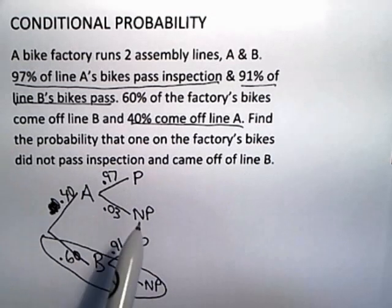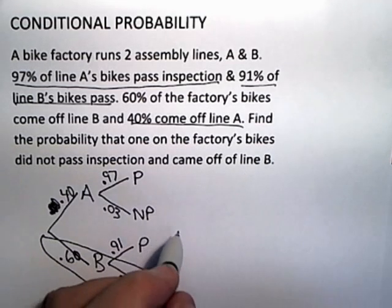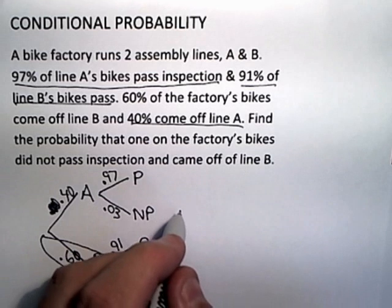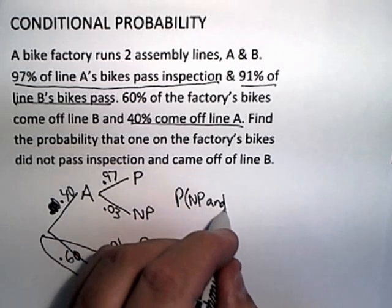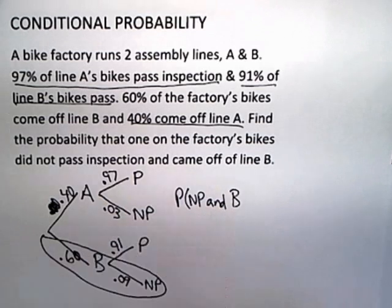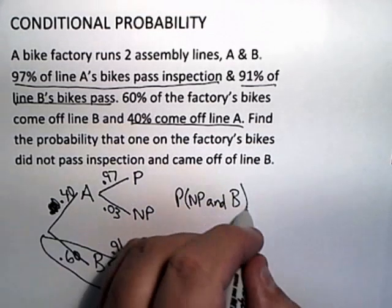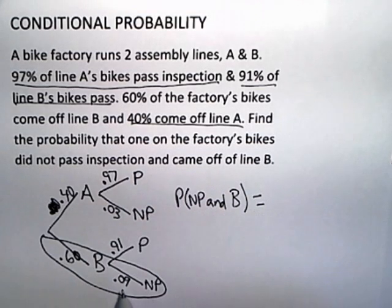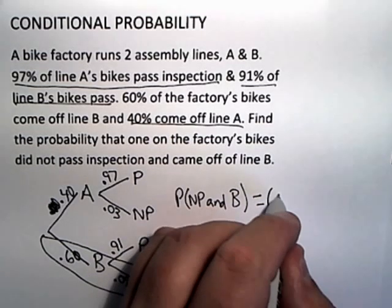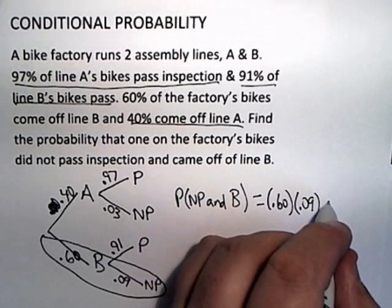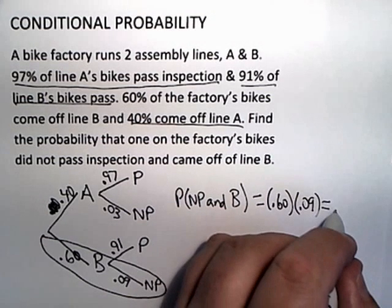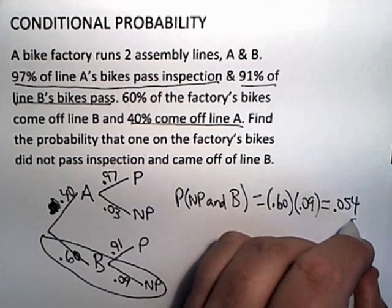So I want to know the probability that a bike did not pass inspection and it came off of assembly line B. That would be 0.6 times 0.09 or 0.60 times 0.09. And if I do that product on a calculator, I will come up with 0.054.